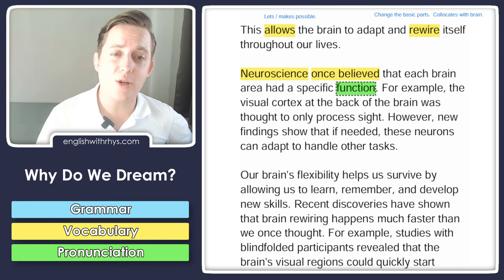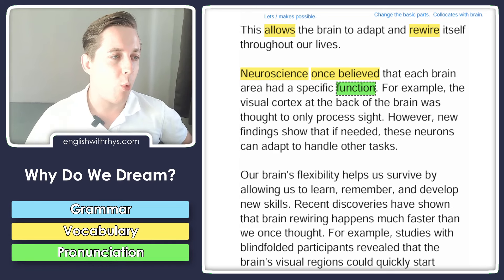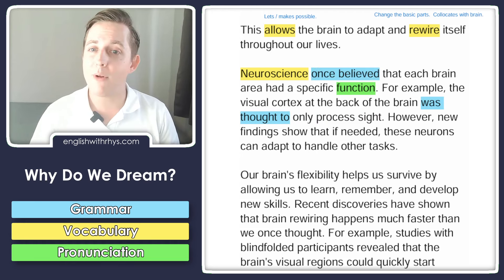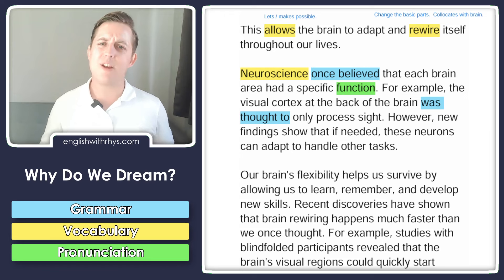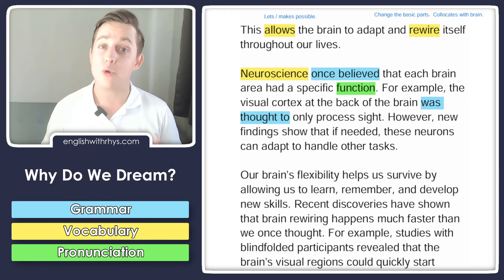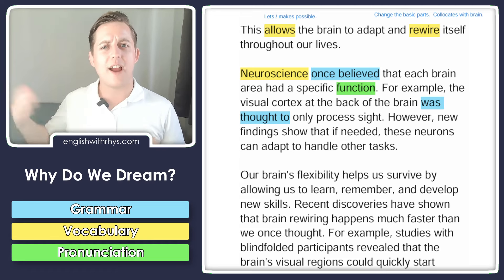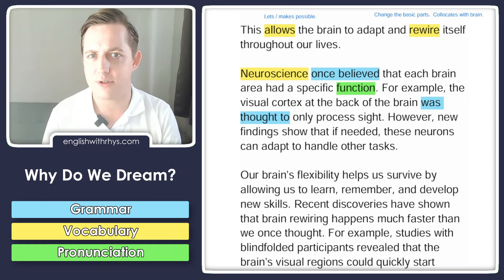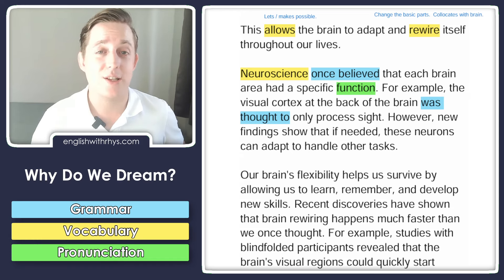For example, the visual cortex at the back of the brain was thought to only process sight. 'It was thought to only process sight' — that's a lot like 'once believed.' People thought it at one point in the past, but they don't think it now. This is really useful for talking about progress or change over time. I once believed that cheese was healthy for me, but now I don't — it shows that I learned something.